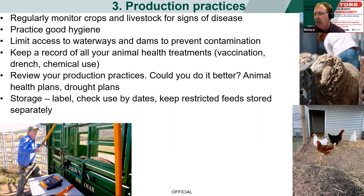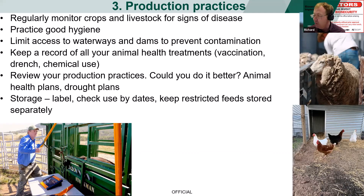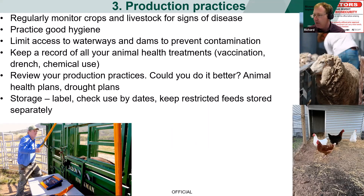Next is storage — make sure everything is correctly labelled, check use-by dates for everything from feed to agvet chemicals, and keep restricted feeds stored separately. As mentioned before, feeding Restricted Animal Material (RAM) in Australia is illegal, and it's basically linked to BSE — mad cow disease. Be aware of all materials that you purchase and check the restricted list. If you've got visitors or school students coming onto the farm, make sure they don't feed anything from their lunch boxes or canteen to the livestock unless it's from your grain store and approved for that animal.